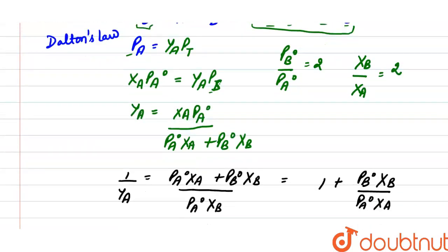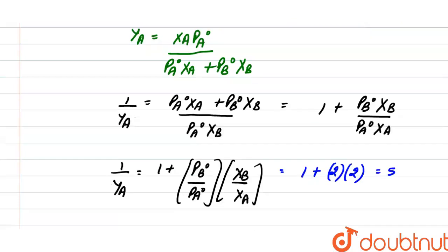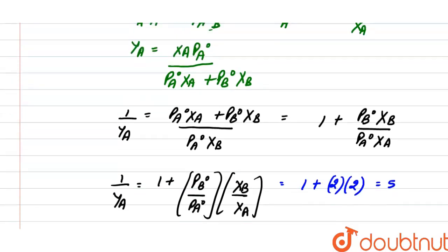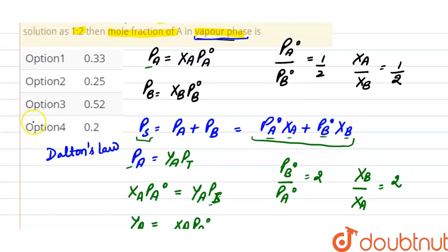Substituting the values: 1 plus 2 × 2 equals 5. Therefore, mole fraction of A in vapor phase equals 1/5, which is 0.2. The correct option among the given choices is option 4.